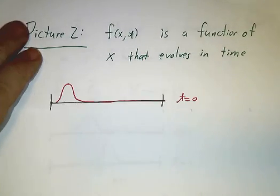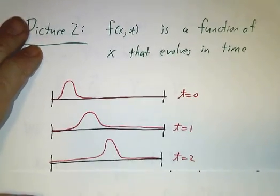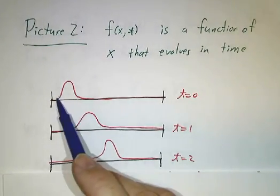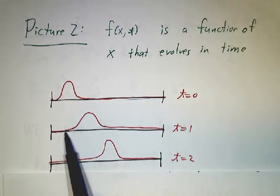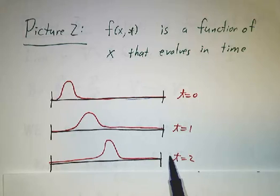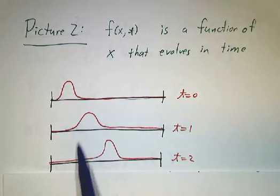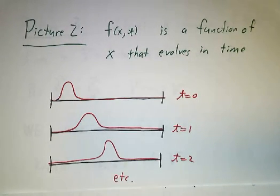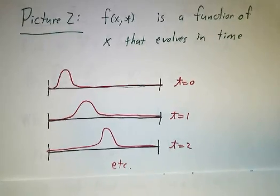So a picture of f might look like this. We say, at time 0 we have this function, and at time 1 we have this function, and at time 2 we have this function. And so we think of f as being not a number, but a function, and it depends on time.